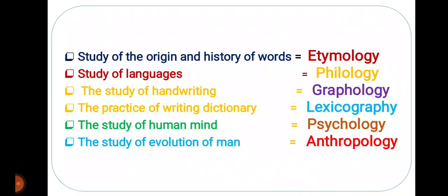The study of the origin and history of words is called etymology. Study of languages is called philology. Study of handwriting is nothing but graphology. The practice of writing a dictionary is called lexicography. The study of the human mind is nothing but psychology. The study of the evolution of man is anthropology.